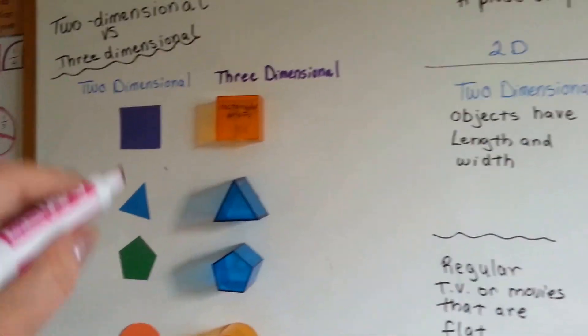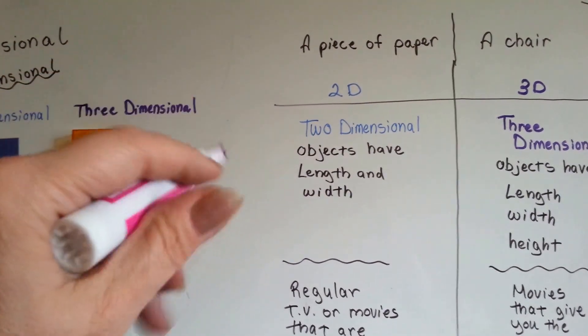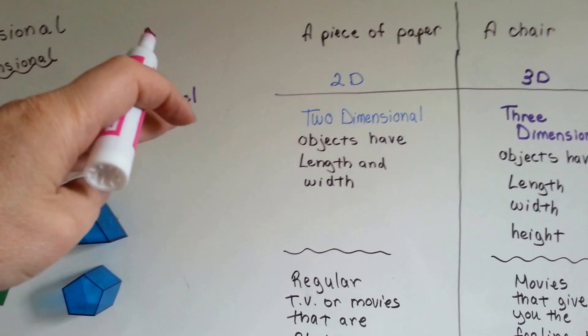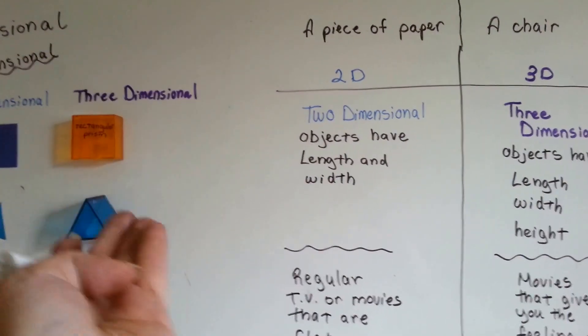A piece of paper, though, would be two-dimensional. It is very flat, it has no height to it, and it just has a length and a width.